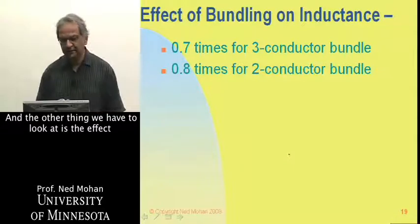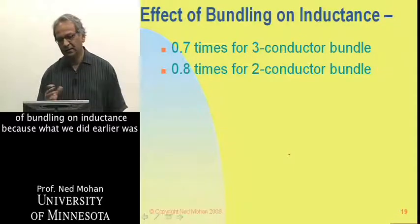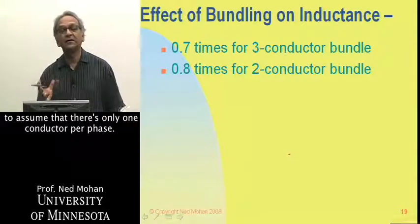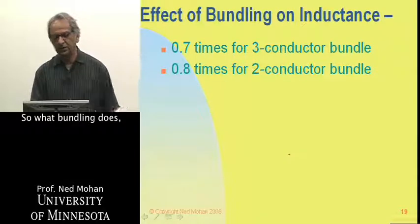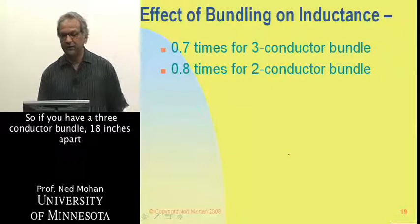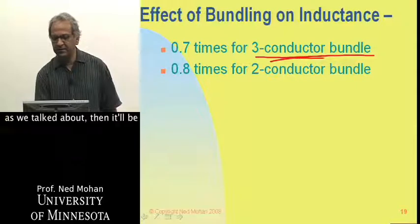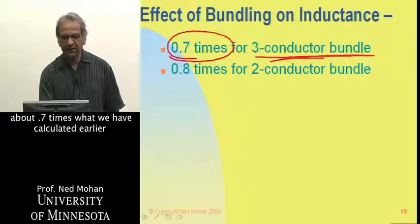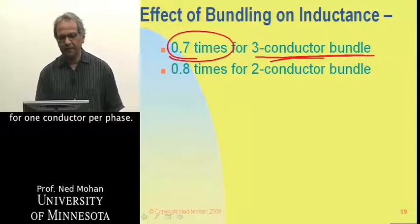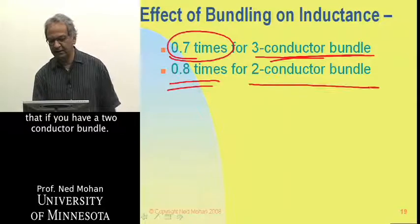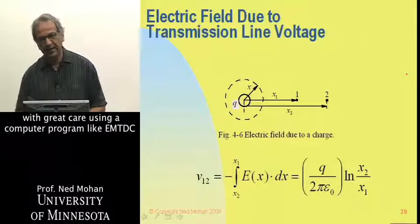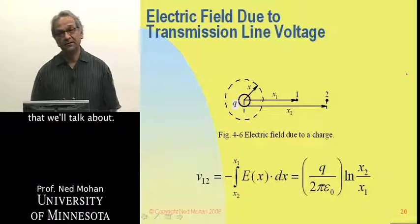The other thing we have to look at is the effect of bundling on inductance because what we did earlier was to assume that there's only one conductor per phase. But we talked about bundling. So what bundling does, it effectively lowers the inductance. So if you have a three conductor bundle, 18 inches apart as we talked about, then it'll be about 0.7 times what we have calculated earlier for one conductor per phase, whereas it'll be 0.8 times that if you have a two conductor bundle. But all these things can be calculated with great care using a computer program like EMT-DC that we will talk about.